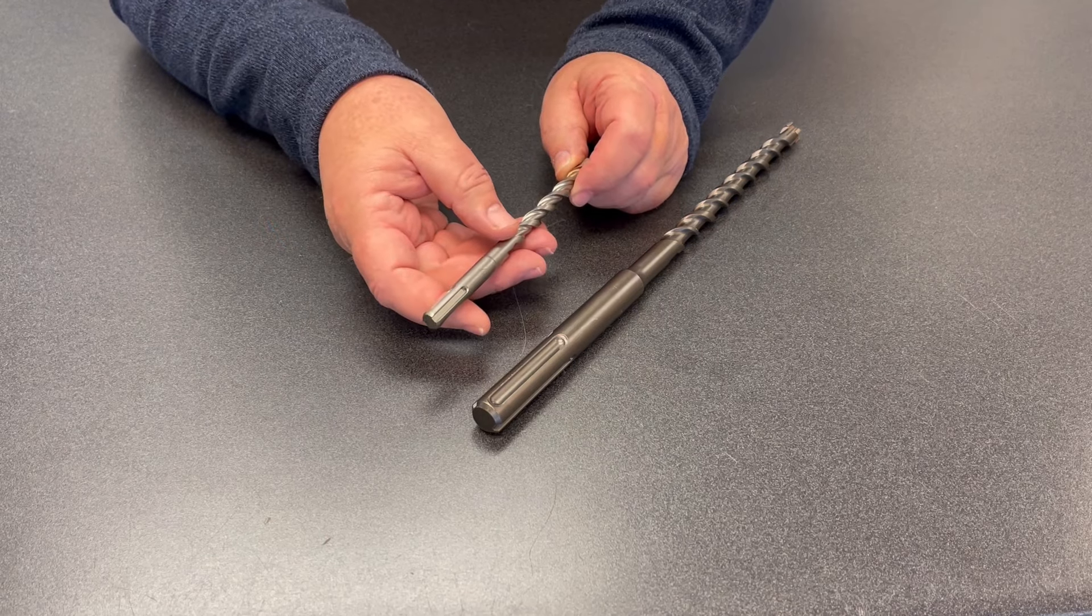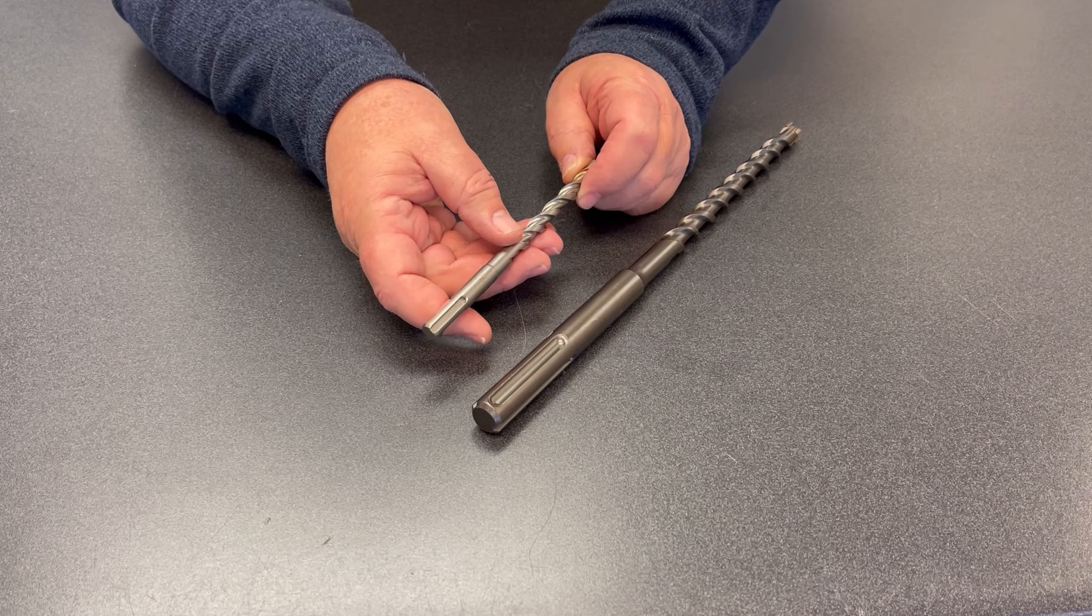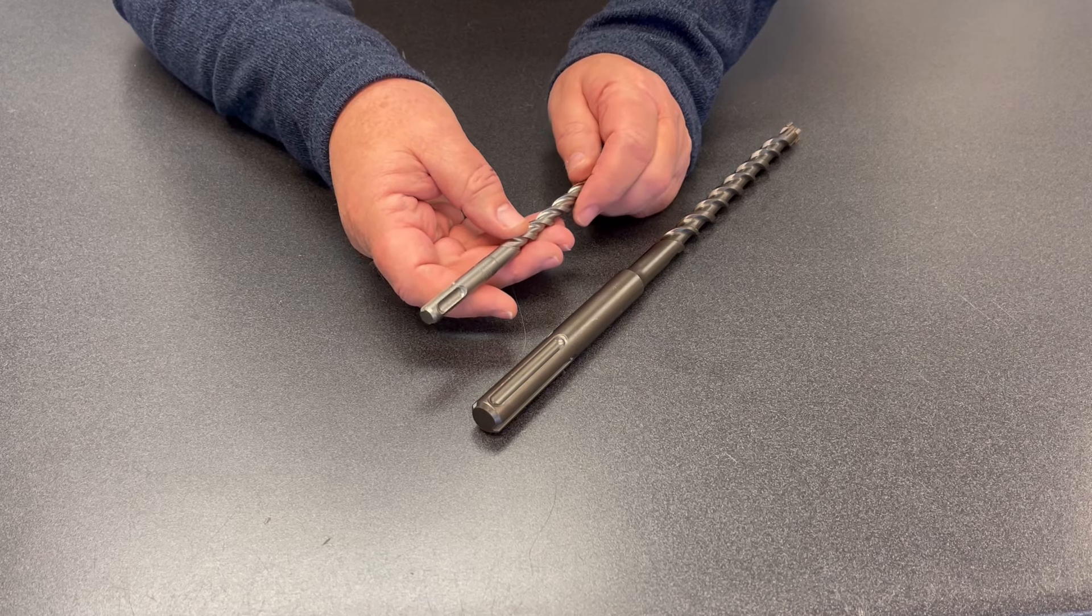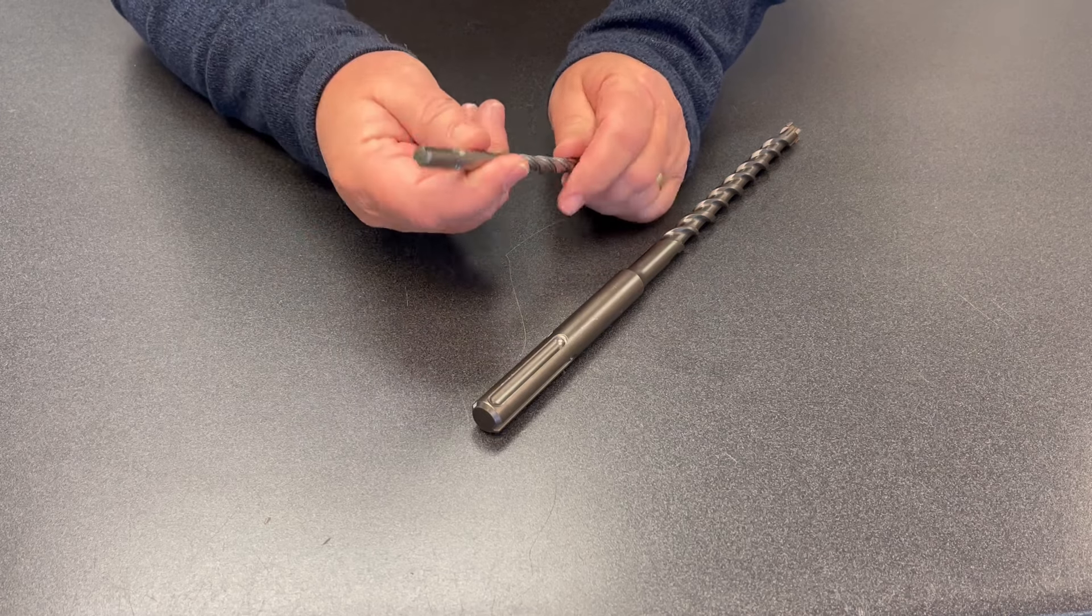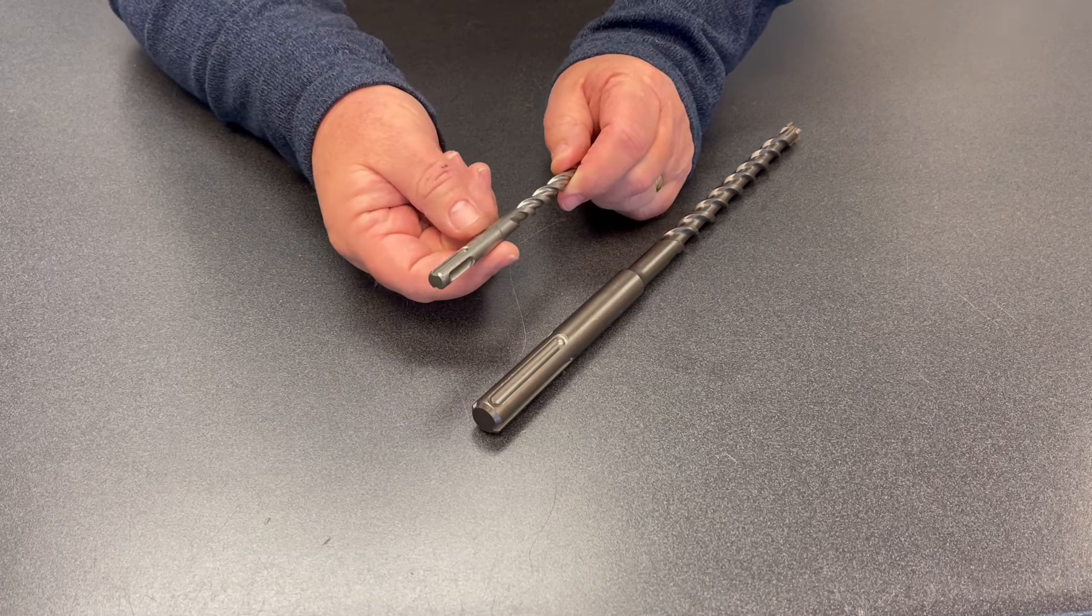It's fairly universal with Bosch, Hilti, DeWalt, all the major manufacturers. And you'll see that this is a three-eighths bit, and so the shank is about three-eighths.